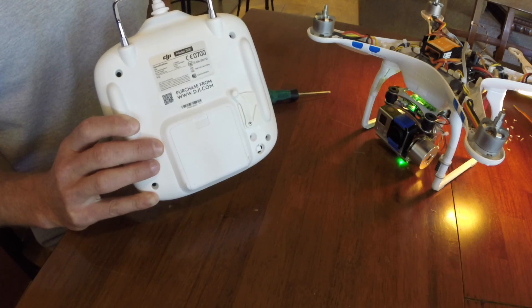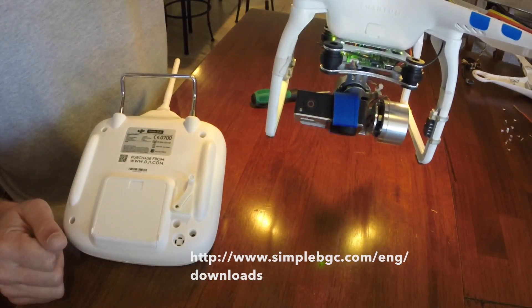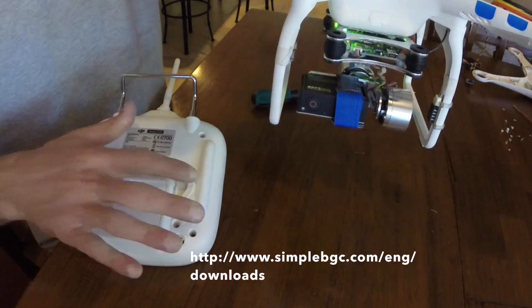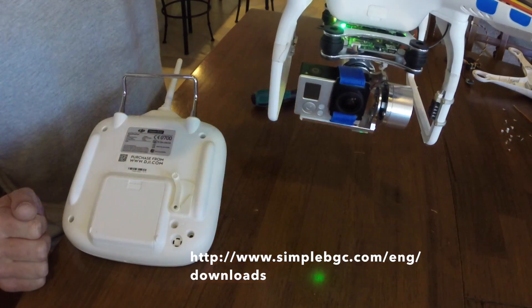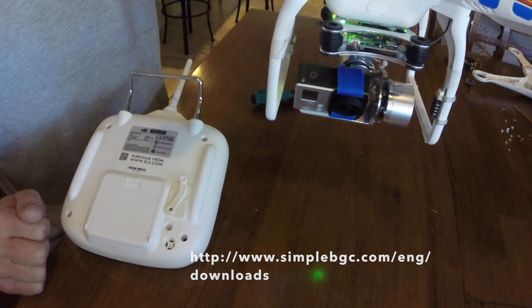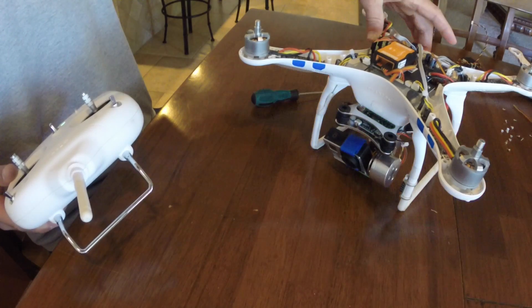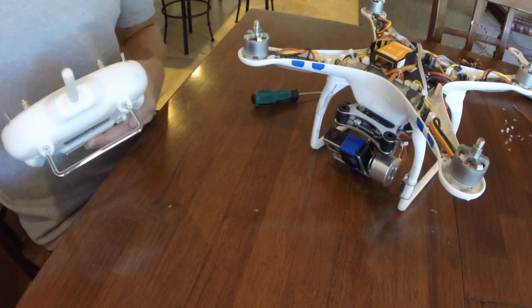If you wish to or need to adjust the pitch of the camera when tilted down or tilted up, you can do so by using software by the Chinese gimbal. Now just put the top back on and remember to plug back in your GPS of your Phantom. Screw it all together and you're ready to fly.